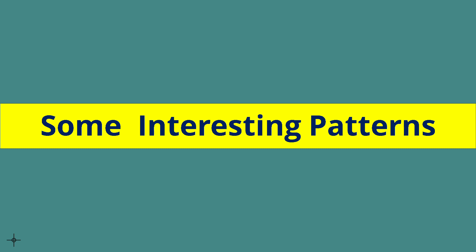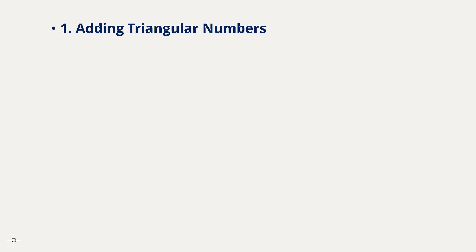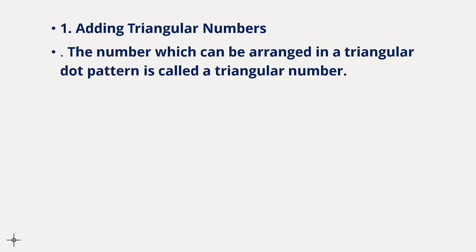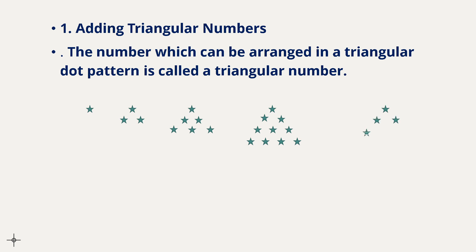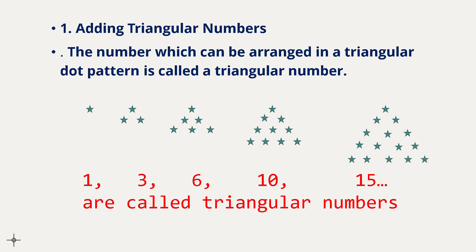Now let's discuss an interesting pattern of square numbers — triangular numbers. Triangular numbers are numbers which can be arranged in a triangular dot pattern. The numbers 1, 3, 6, 10, 15 can all be arranged in a triangular dot pattern, so these are the triangular numbers.